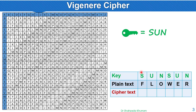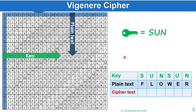How do we do the encryption? In the table, we look at the key letters horizontally, from left to right. The plain text letters are looked up vertically, from top to bottom. The key row and the plain text column give us the cipher letter.